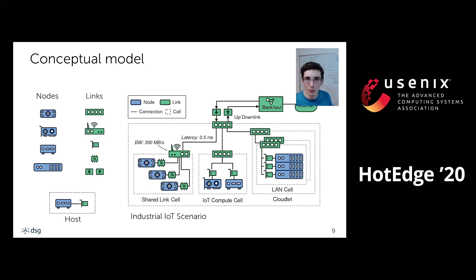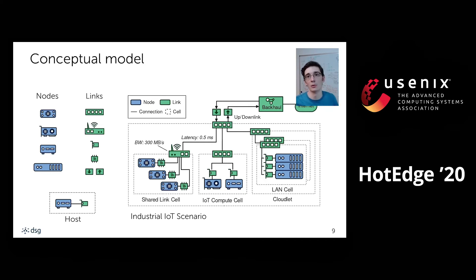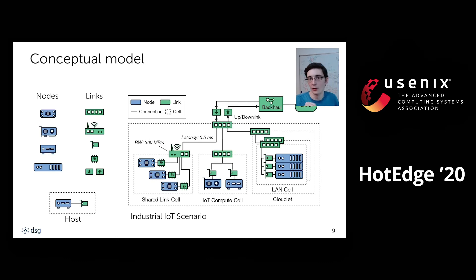Cells can be composed hierarchically and connected to the internet through separate up and down links. Our tool also provides common uplink configurations, for example up/down link speeds associated with a business ISP or a fiber optic network. The model focuses on the high-level topology of edge systems rather than the internals of the internet backbone.